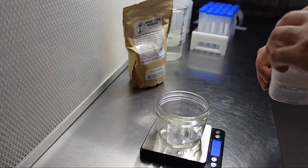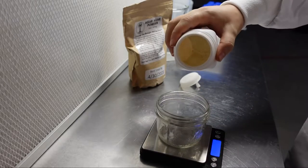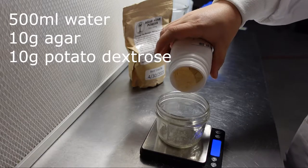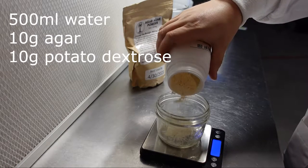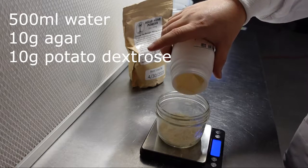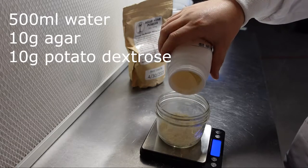Start by weighing out the appropriate amount of nutrients and agar powder. For 500ml of water, I'm using 10g of potato dextrose and 10g of agar powder. There are many recipes you can use for this, so I'll put a link in the description with more resources.